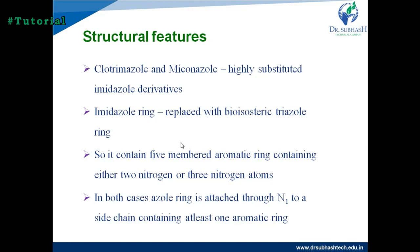For example, in triazole derivatives, the imidazole ring can be replaced by a triazole ring. That is why the common name is azoles. These azoles contain a 5-membered aromatic ring containing either 2 nitrogen atoms (imidazole) or 3 nitrogen atoms (triazole). That nitrogen difference is why they are called imidazole or triazole derivatives.